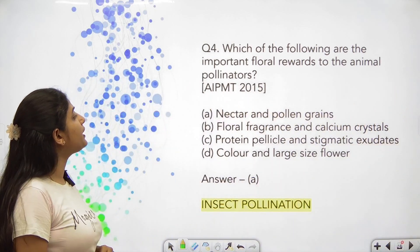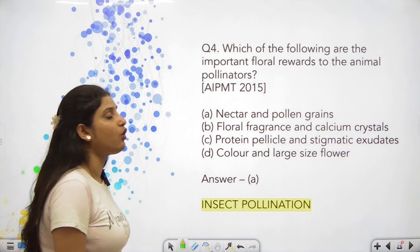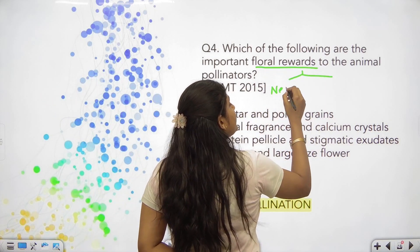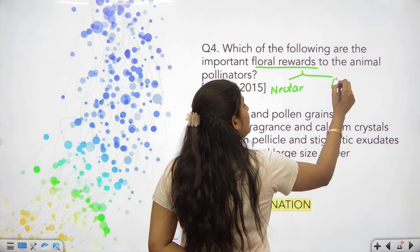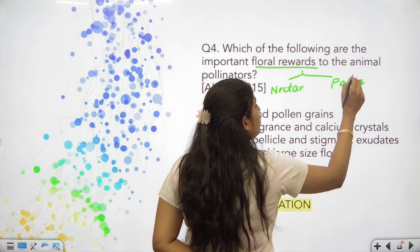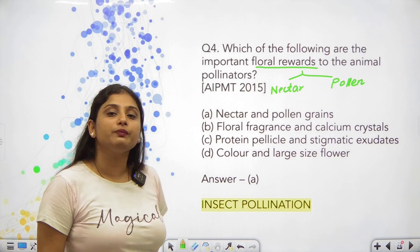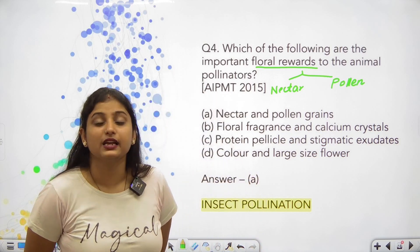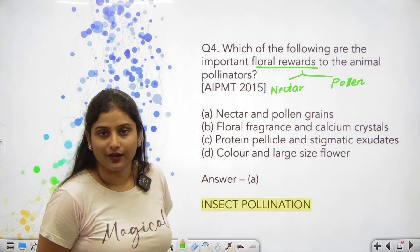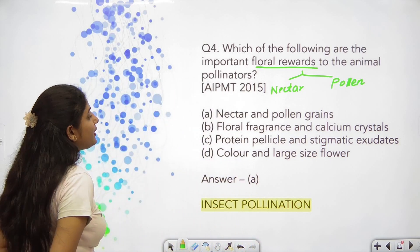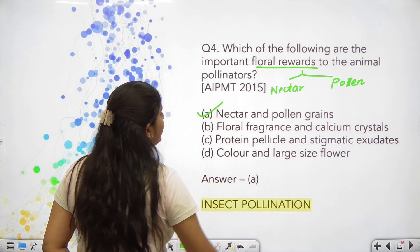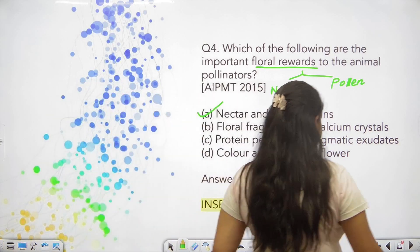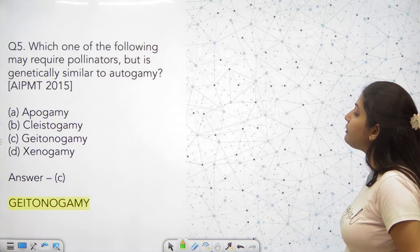Question number 4: which of the following are important floral rewards? We studied in NCERT that nectar and pollen are the major important floral rewards. Apart from that, some plants give space for animals to lay eggs, like Amorphophallus and the Moth-Yucca relationship. Here, nectar and pollen — Option 1 — is the direct answer. This was asked in AIPMT 2015.